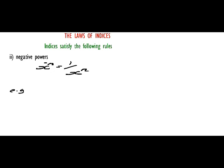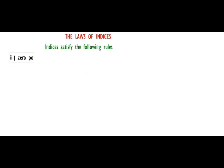For example, if you have a number like 5 raised to negative 3, that is simply 1 over 5 raised to power 3. The negative sign simply implies reciprocal.